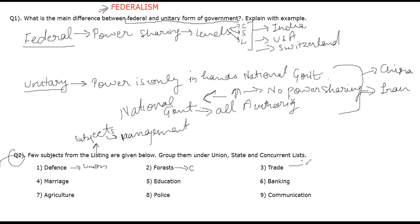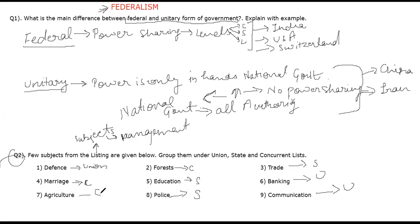The third one is trade — it is controlled by the state governments. The fourth one is marriage — it is controlled by both union and state, so it is under the Concurrent list. Education is controlled by the state. Banking is controlled by the union. Communication is also controlled by the union. Police and law and order — the state has to maintain that, so it falls under the state list. Agriculture falls under the Concurrent list, meaning both state and central level handle it. You can note these down, and we will now move on to the third question.